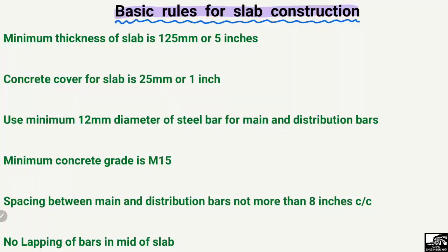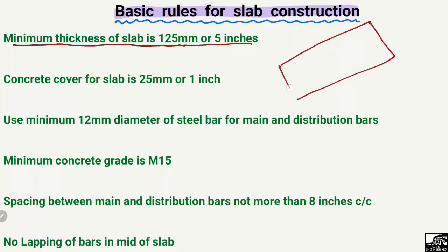Starting from the first important and basic rule: the minimum thickness of your slab should be 125 mm or 5 inches. So if I want to design a slab, the minimum thickness of this slab should be equal to 125 mm or 5 inches.